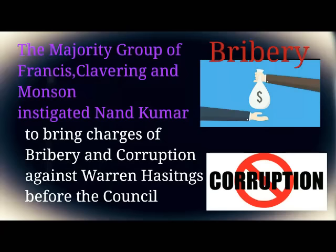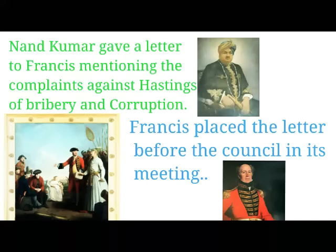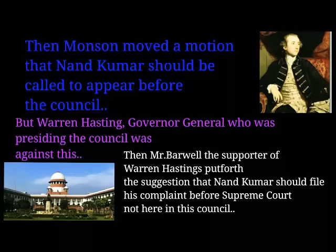The majority group of Francis, Clavering, and Monson — who were against the Governor General — instigated Raja Nandkumar to bring charges of bribery and corruption against Warren Hastings before the council. Nandkumar, who had earlier been a loyal supporter of the company, gave a letter to Francis mentioning complaints against Hastings for bribery and corruption. Francis then placed this letter before the Governor General's council meeting.